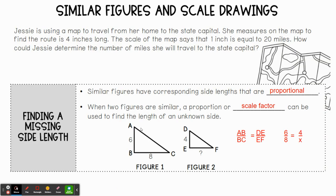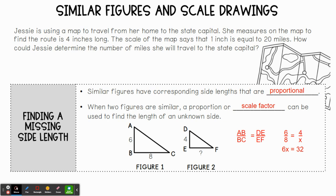Now let's plug in our numbers. We have 6 over 8 equals 4 over x. Cross multiplying: 4 and 8 are multiplied, and 6 and x are multiplied. That gives us 6x equals 32, since 8 times 4 is 32. Solving for x: divide both sides by 6, you get x equals 5.3. So if we're scaling down from 6 to 4, this side length also scales down from 8 to 5.3.